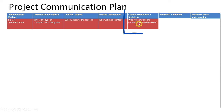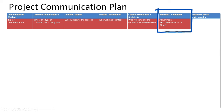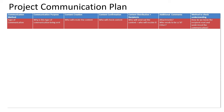Content distribution and recipients — who's going to send it out and who will receive it? Not all communication is going to be sent from the same individual. For example, I may create an announcement that I need the president of the organization to send on my behalf. Additional comments cover attachments, who needs to be CC'd, and the method to check understanding — how do you know that your communication was read and understood?